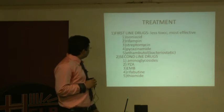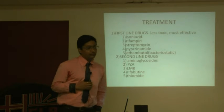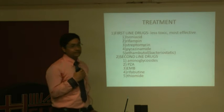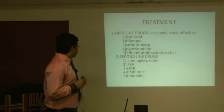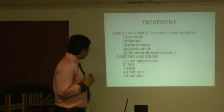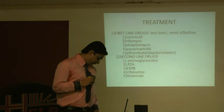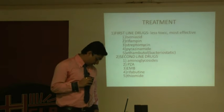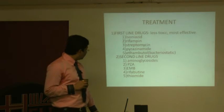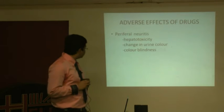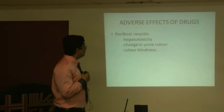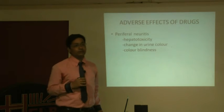The second-line drugs are more toxic and less effective. These include aminoglycosides such as amikacin and kanamycin, as well as ethambutol, rifabutin, and thioamide. These drugs are only considered for resistant cases and are not commonly used for new tuberculosis cases due to their higher toxicity.